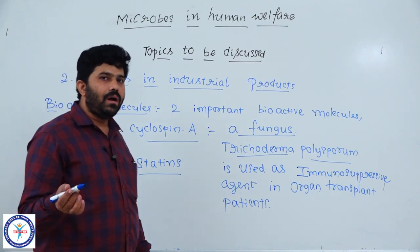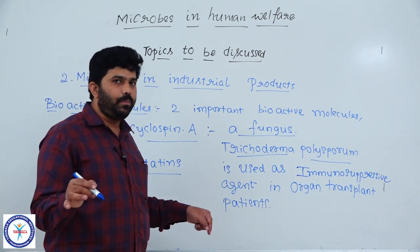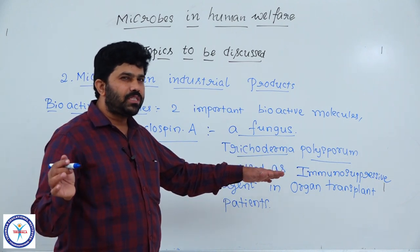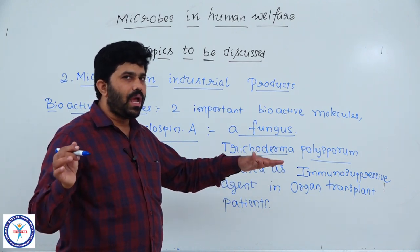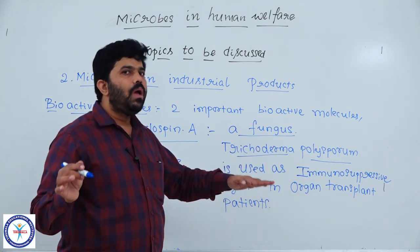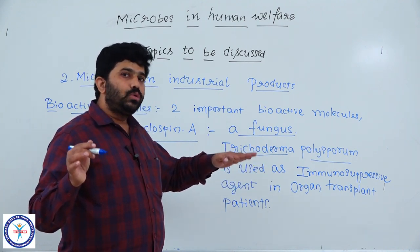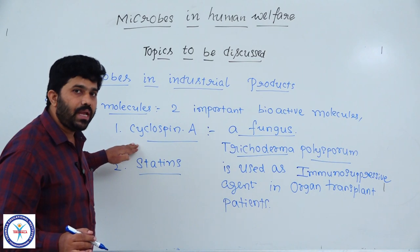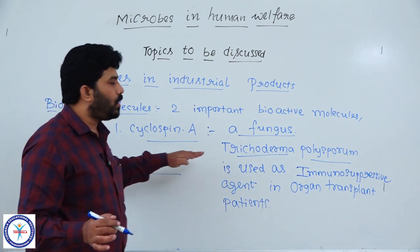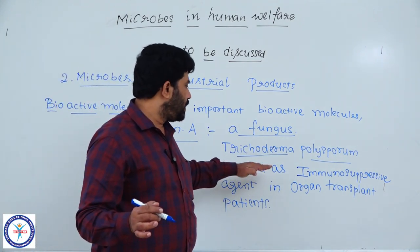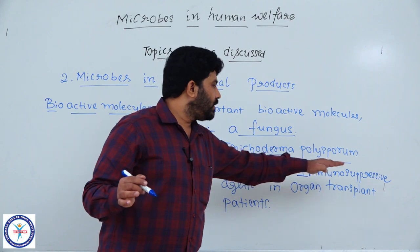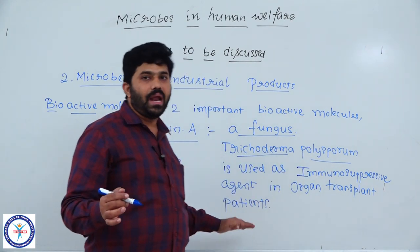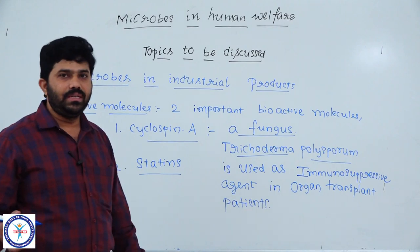Whoever undergoes organ transplantation — in those recipients' bodies, their own immune system needs to be suppressed up to some extent of time. To suppress it requires some chemicals, and the first one is Cyclosporin A, which is very important and used as an immunosuppressive agent in organ transplant patients.